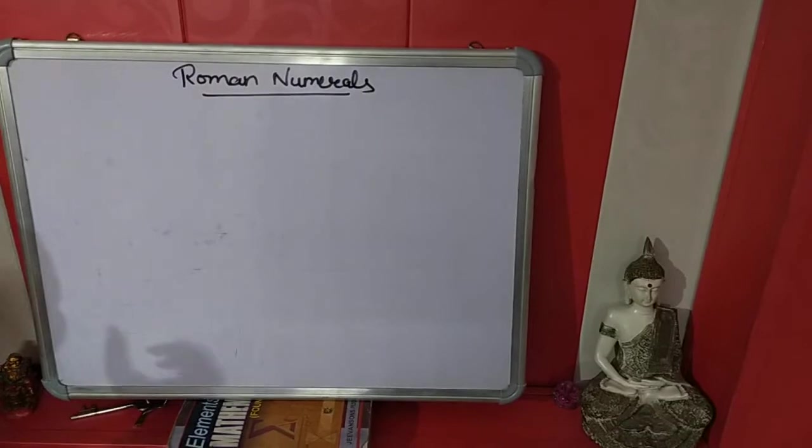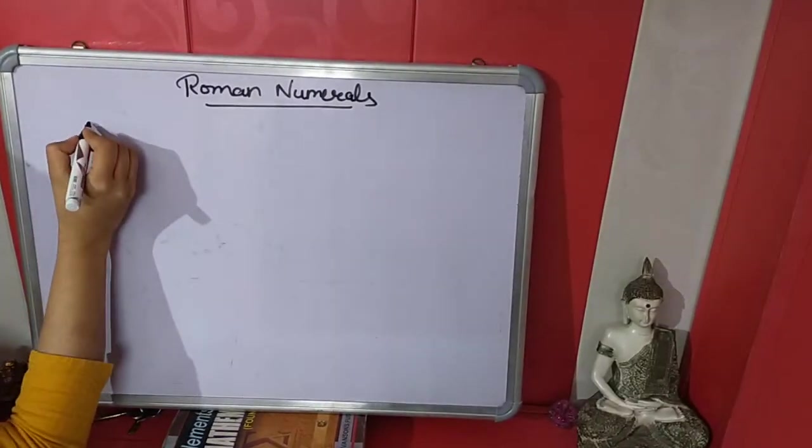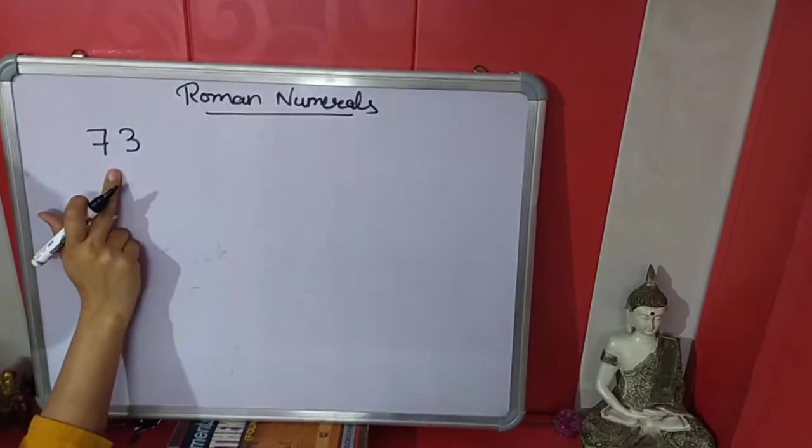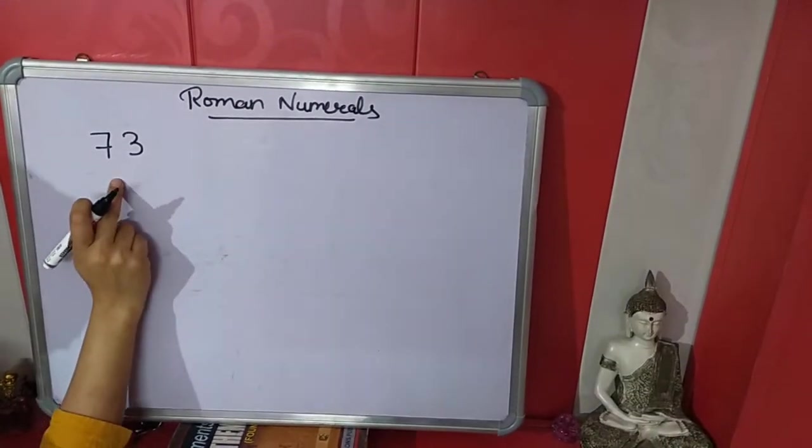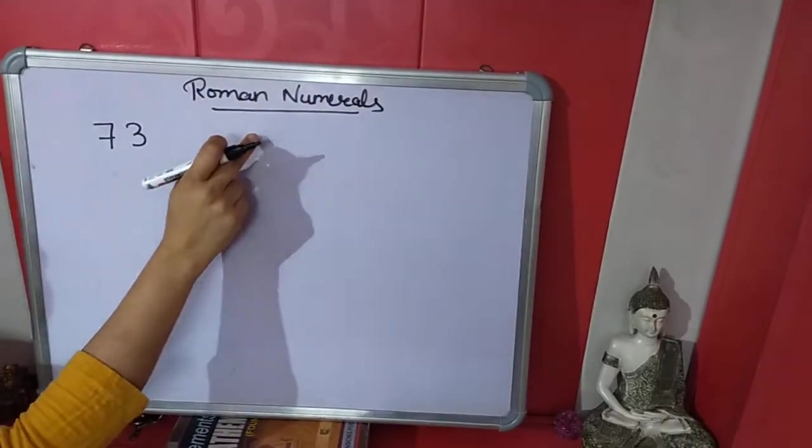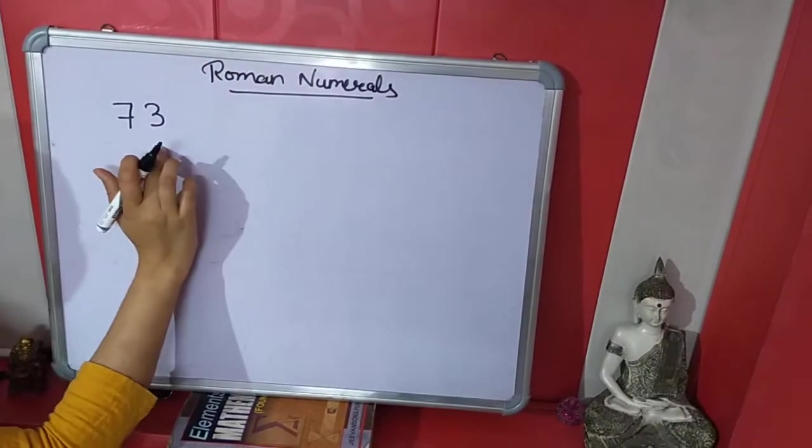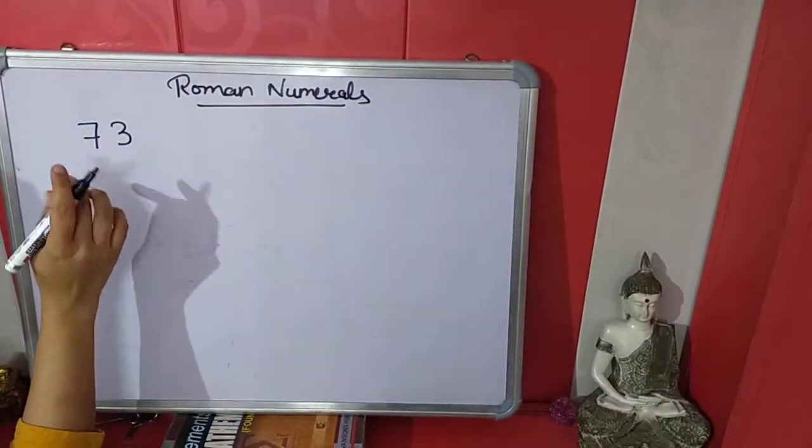So we will use those Roman numerals here. If 73 is given, it is a Hindu-Arabic number. We have to convert Hindu-Arabic number into Roman numerals. Now how will we expand this number 73? This is the easy method. We will write 70 plus 3. We will write this number in expanded form.